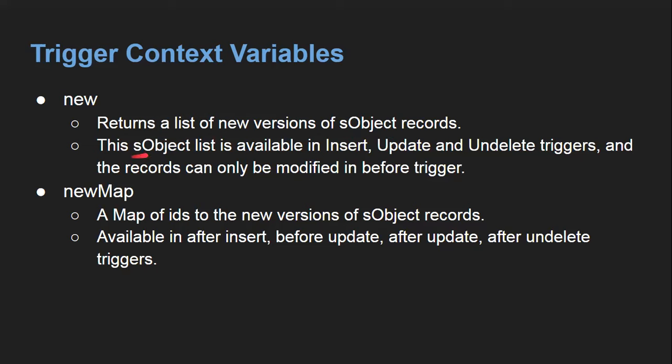Now here is a real example that does not just have a System.debug statement but will actually affect the record. I'm going to modify the trigger we already created. This trigger will run on before insert, and here we are using the context variable Trigger.new. Whenever we create a new record, that record will be available in Trigger.new.